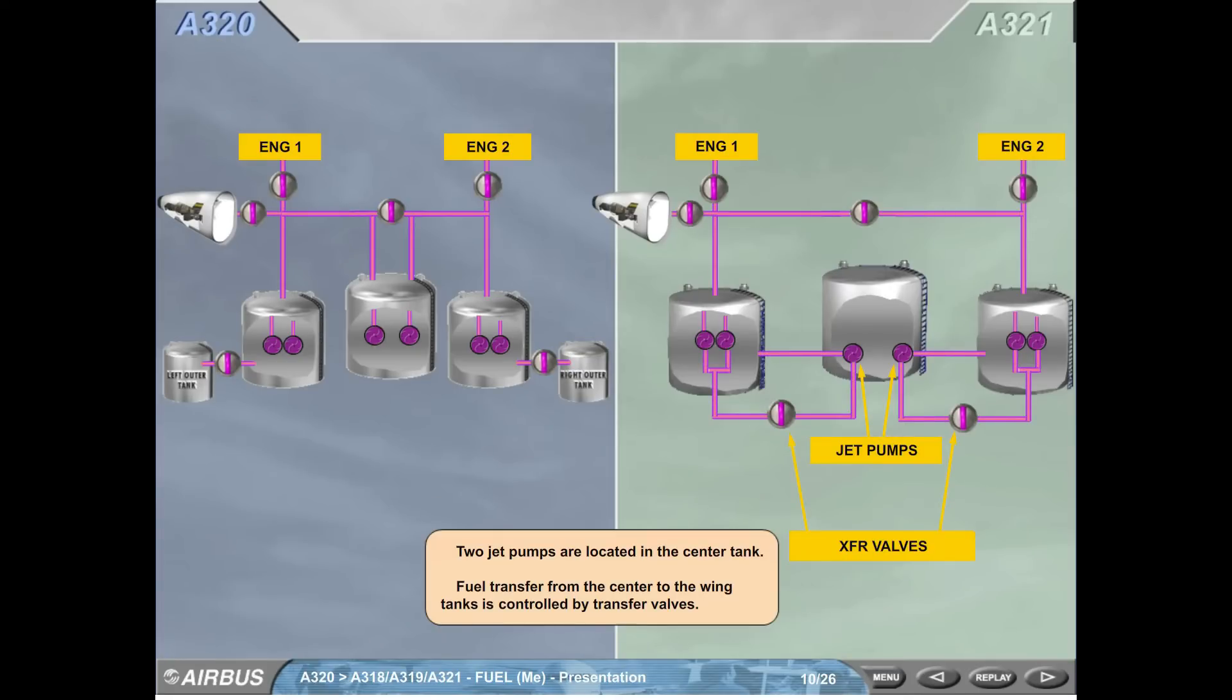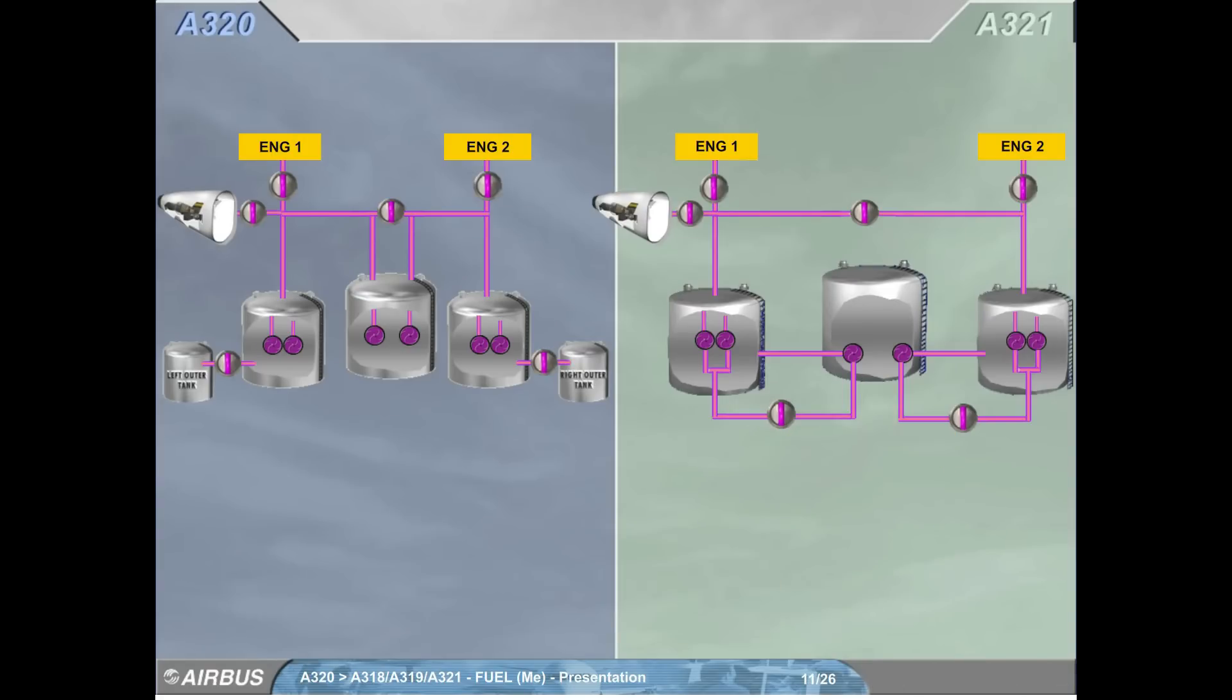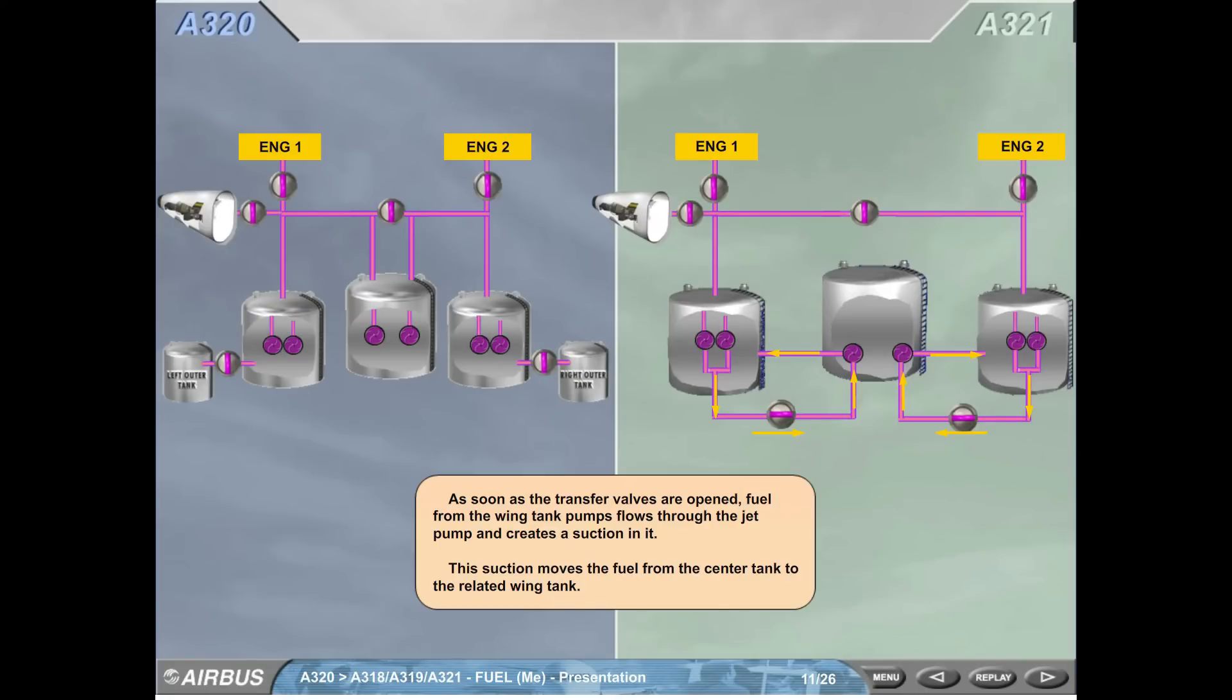Two jet pumps are located in the center tank. Fuel transfer from the center to the wing tanks is controlled by transfer valves. As soon as the transfer valves are opened, fuel from the wing tank pumps flows through the jet pump and creates a suction in it. This suction moves the fuel from the center tank to the related wing tank.